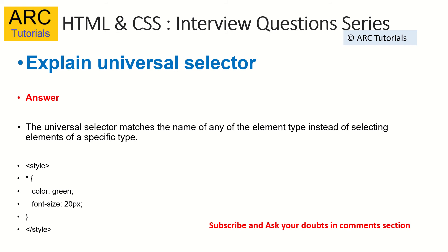The universal selector matches the name of any element type instead of selecting a specific type. This means whatever style we write in the universal selector will apply to all elements, irrespective of their type. For example, if you put asterisk in curly braces with color green and font-size 20, it will apply to all the elements and put that style on all of them.